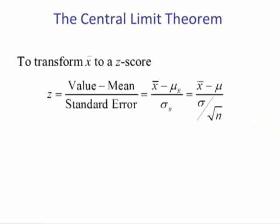To transform x-bar to a z-score, we use this formula: take our x-bar, subtract our mean, and then divide it by our standard deviation.